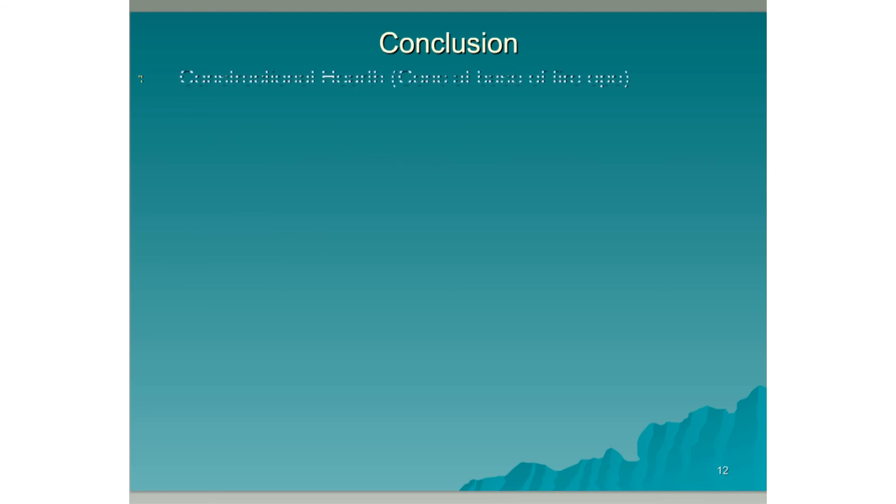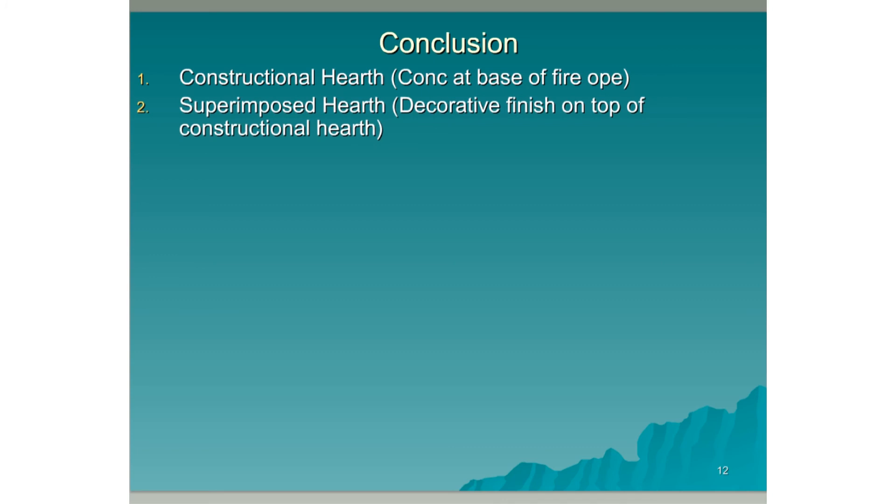In conclusion, a constructional hearth: this is a slab of concrete at the base of the fireplace. A superimposed hearth: this is a decorative finish on top of the constructional hearth. A chimney: this is any part of the building containing a flue.